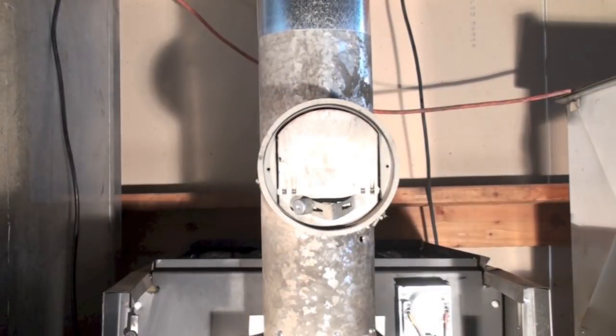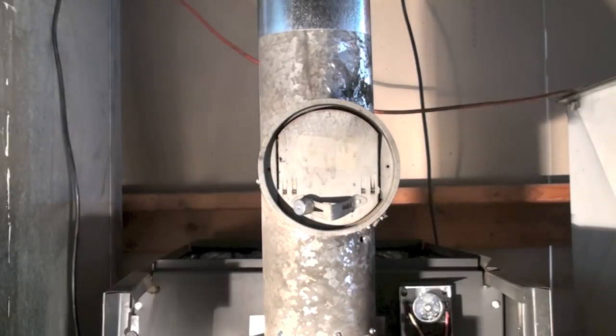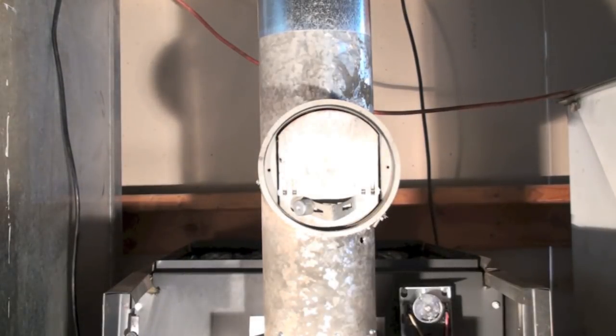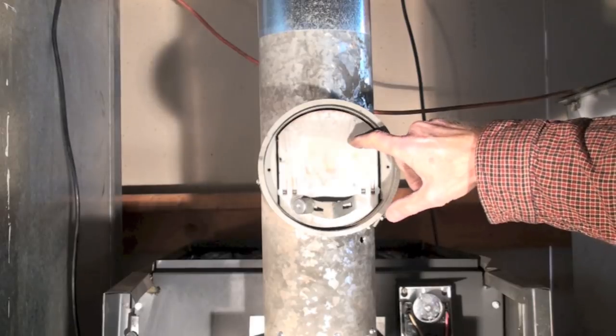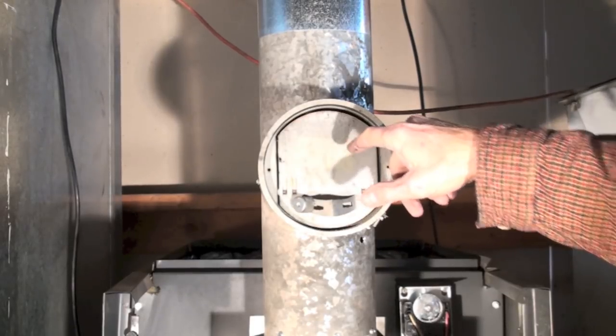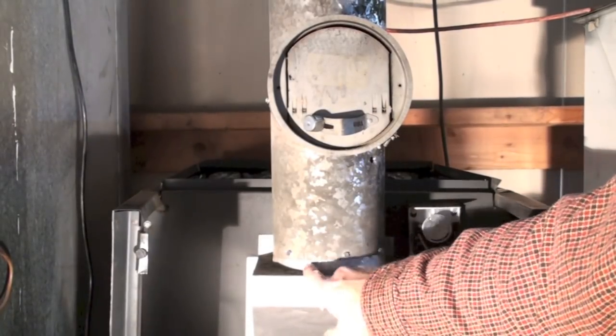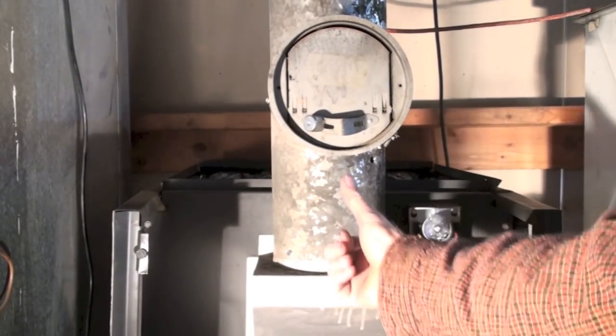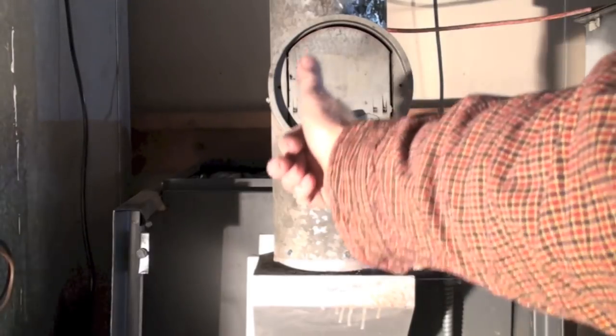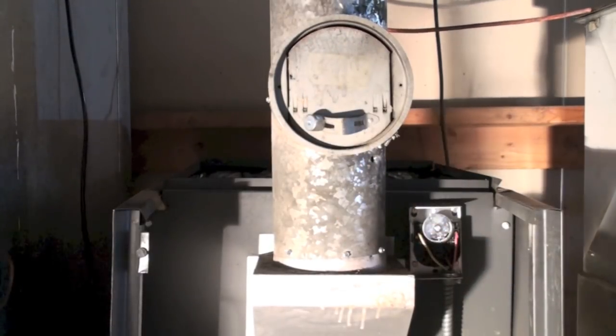Okay, this one's about adjusting the barometric damper on the oil furnace. This is a barometric damper here, and your breaching is here - comes out of the furnace and goes up the vent.